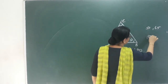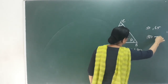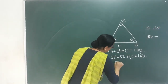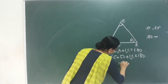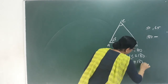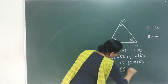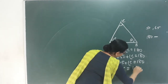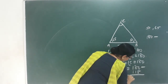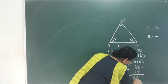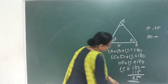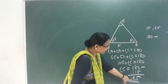180 minus 115: 115 plus angle C equals 180 degrees. Then angle C equals 180 minus 115, which equals 65 degrees.